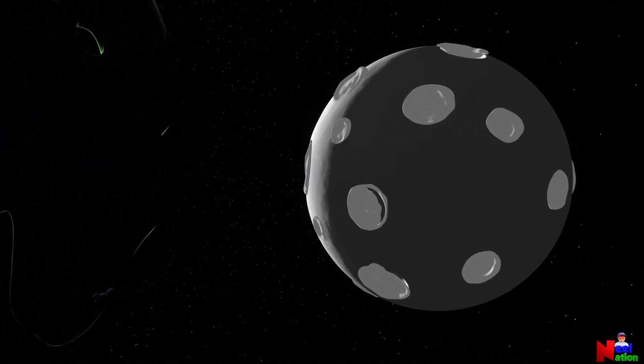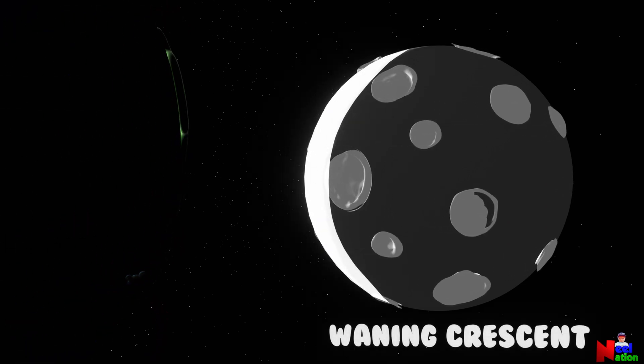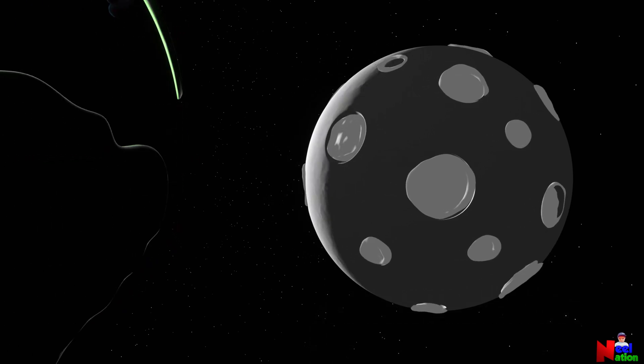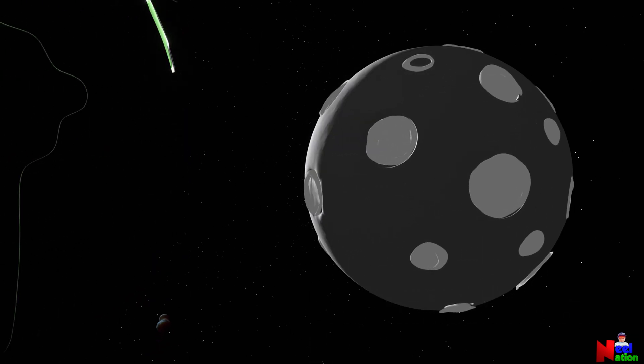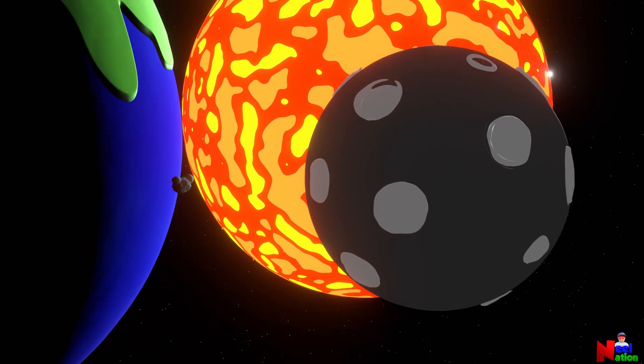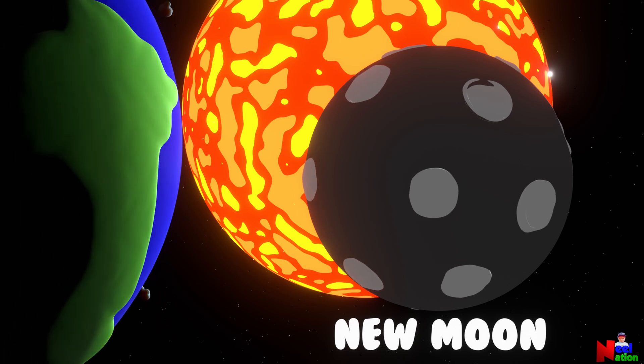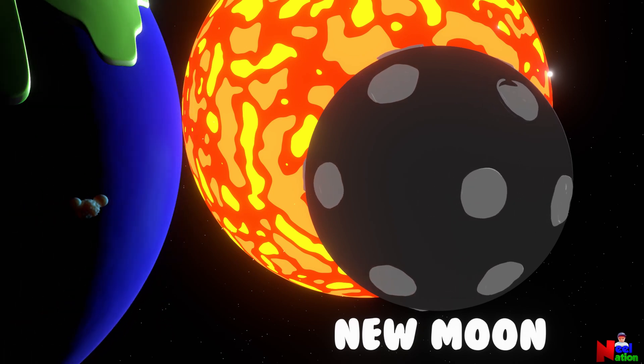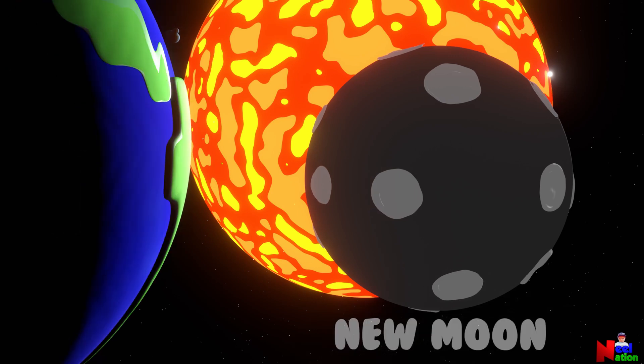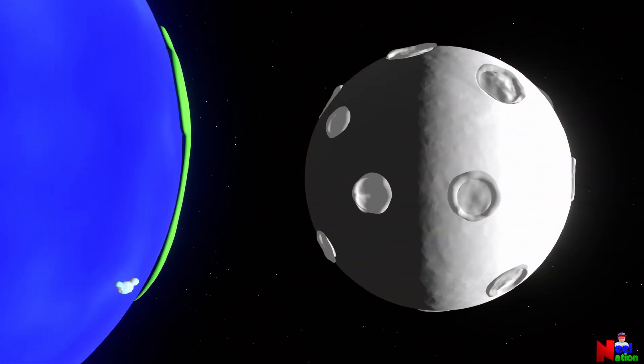Waning crescent. During this phase, only a small sliver of the moon is visible to the observers from Earth. The moon keeps waning further back to the new moon phase. These phases keep repeating every twenty-nine and a half days.